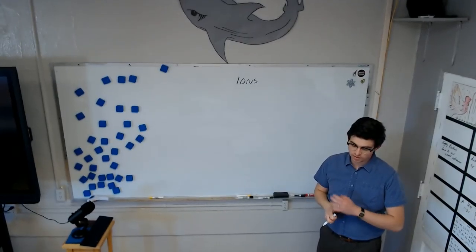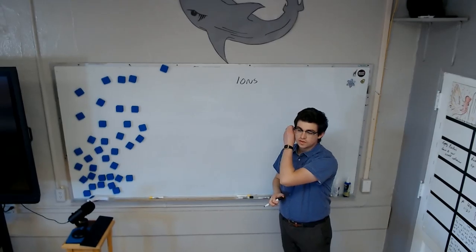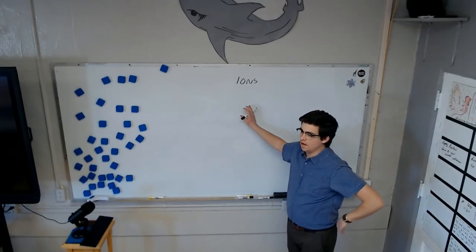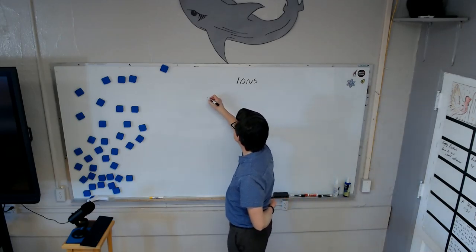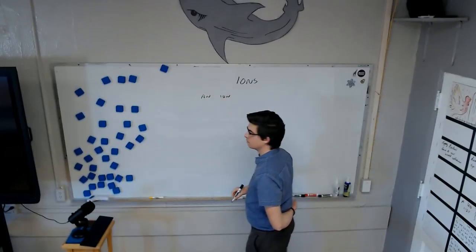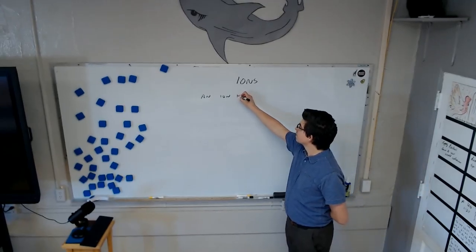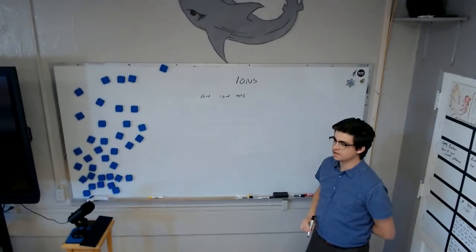So, as you remember from your previous lessons, what is an ion? How is it different from an atom? Okay, here's another word. An ion has a?